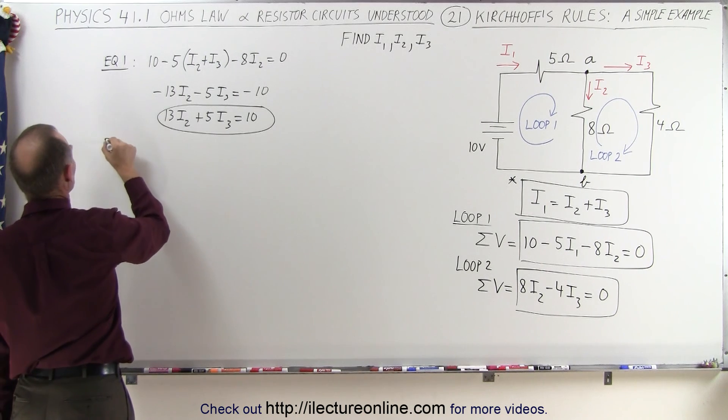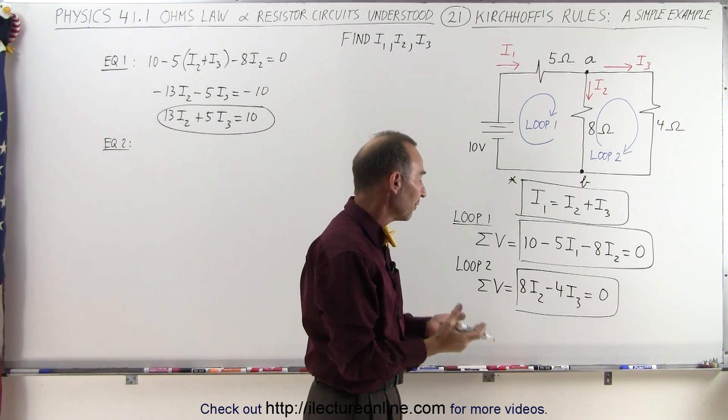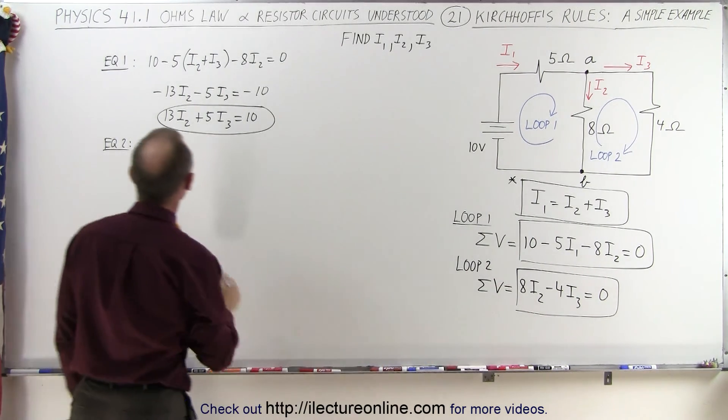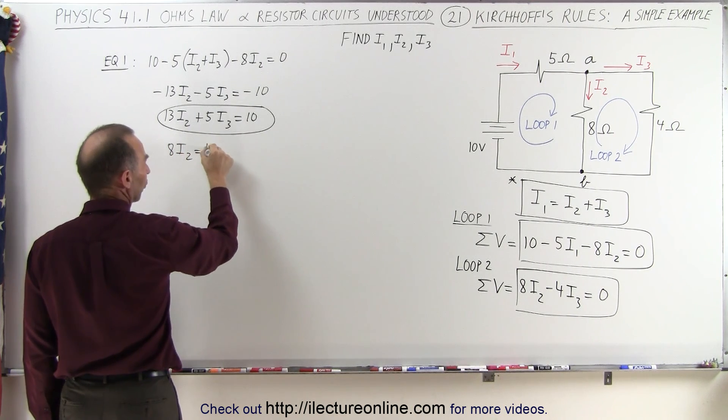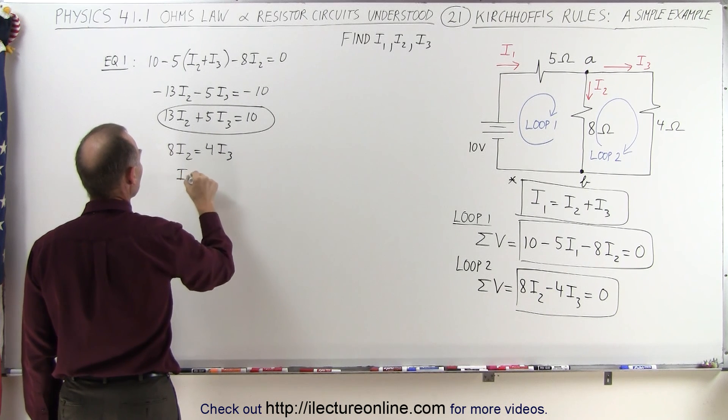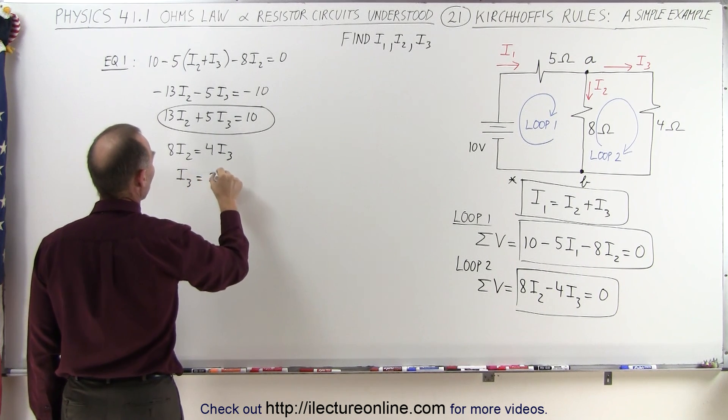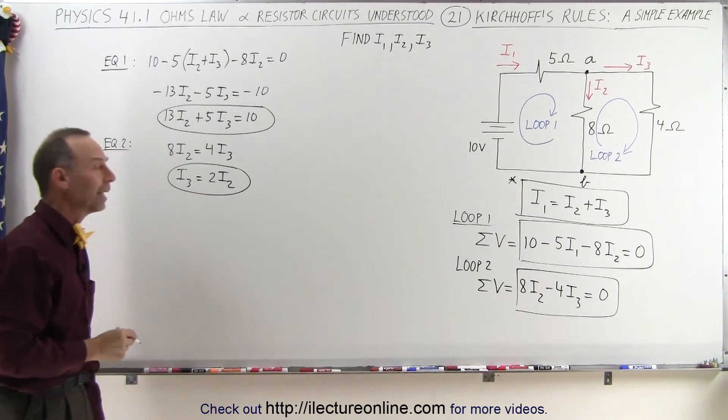Starting with equation number 2, starting with this one right here, notice we already have it set in terms of I2 and I3. So here we can say that 8I2 is equal to 4I3, or I3 is equal to 2I2. So here we have a direct relationship between I2 and I3.